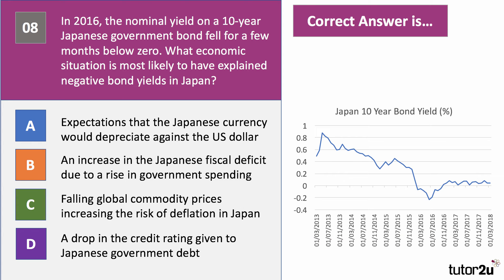Question eight: in 2016, the nominal yield on a 10-year Japanese government bond fell for a few months below zero — you can see that on the chart. What economic situation is most likely to have explained negative bond yields in Japan? This is a tough question — have a go, press the pause button, think it through, and then we'll go to the answer together.